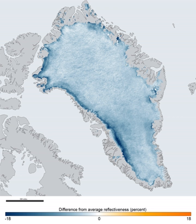The ice surface reaches its greatest altitude on two north-south elongated domes or ridges. The southern dome reaches almost 3,000 metres at latitudes 63 to 65 degrees north; the northern dome reaches about 3,290 metres at about latitude 72 degrees north, the fourth highest summit of Greenland. The crests of both domes are displaced east of the centre line of Greenland. The unconfined ice sheet does not reach the sea along a broad front anywhere in Greenland, so that no large ice shelves occur.